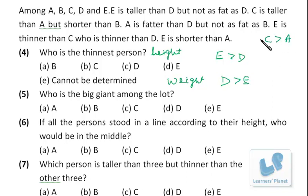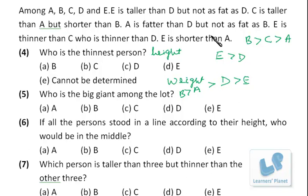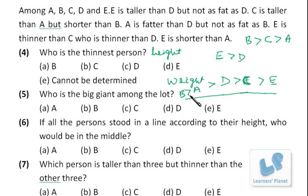C is taller than A but shorter than B. A is fatter than D but not as fat as B, so A is less fat than B. E is thinner than C, who is thinner than D — so C lies between D and E in weight. We write C and E in the weight sequence. C is thinner than D and E is thinner than C, so the weight sequence is B, A, D, C, E.